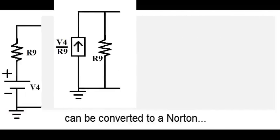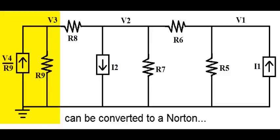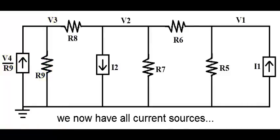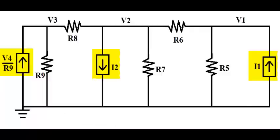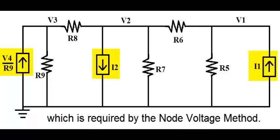since this Thevenin component can be converted to a Norton, we now have all current sources, which is required by the node voltage method.